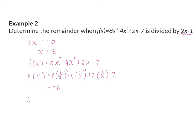And therefore, we can say that if this function is divided by 2x minus 1, the remainder will be minus 6. And because we are working with variables, a remainder can equal a negative value.